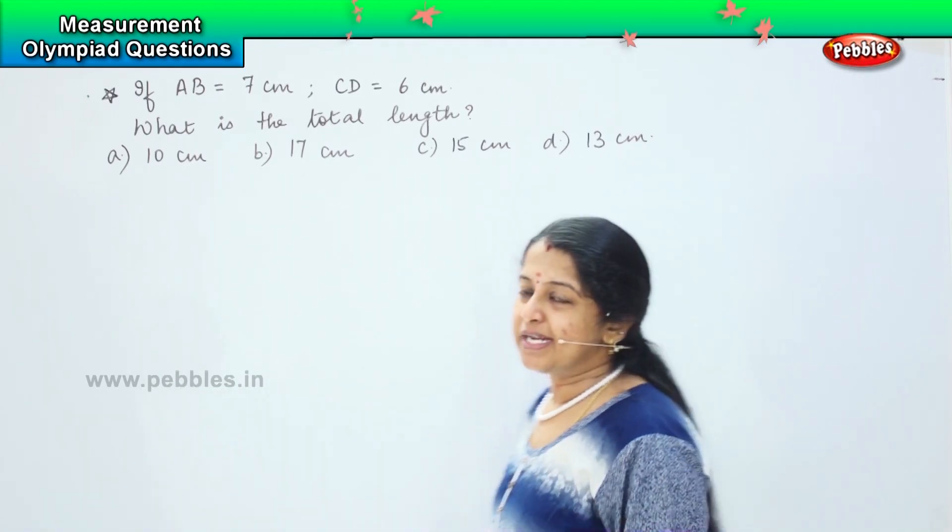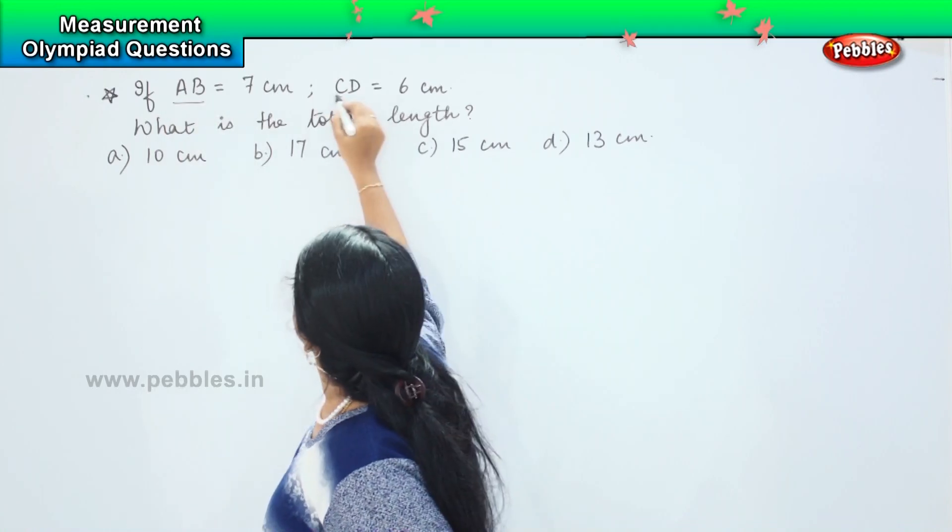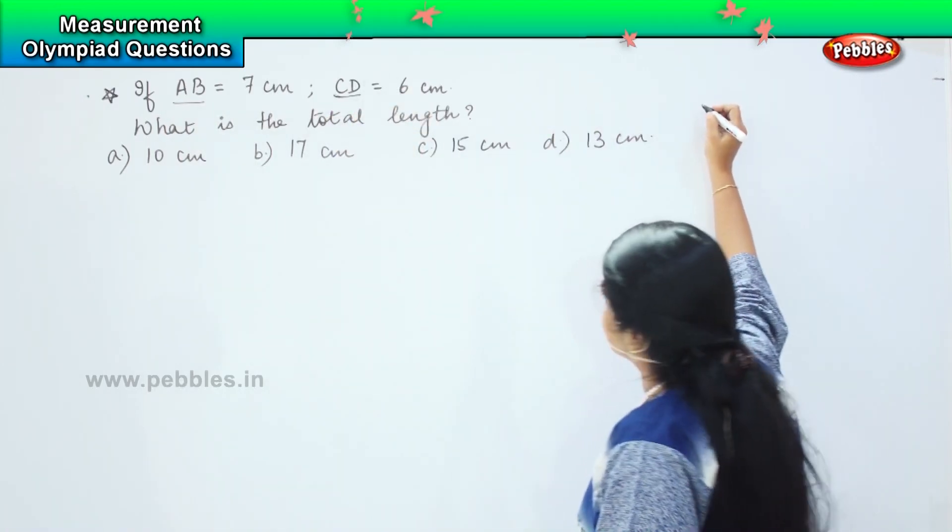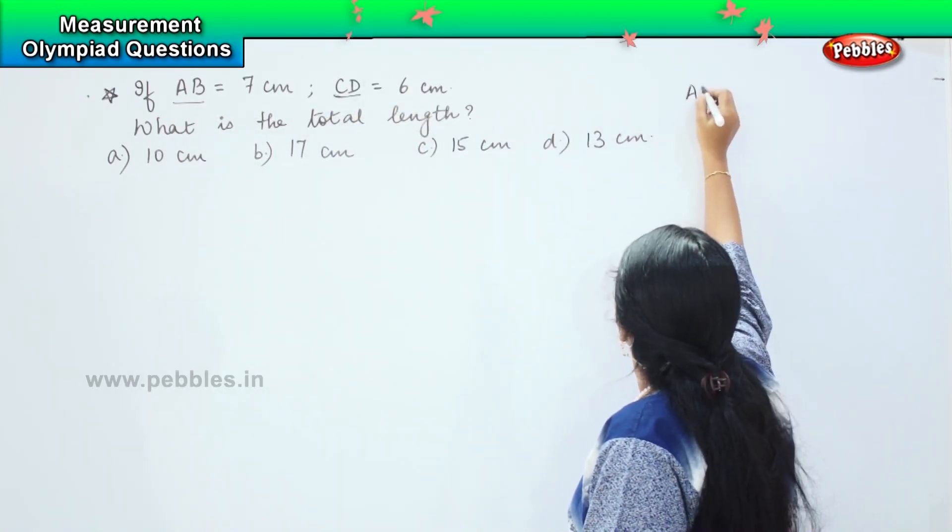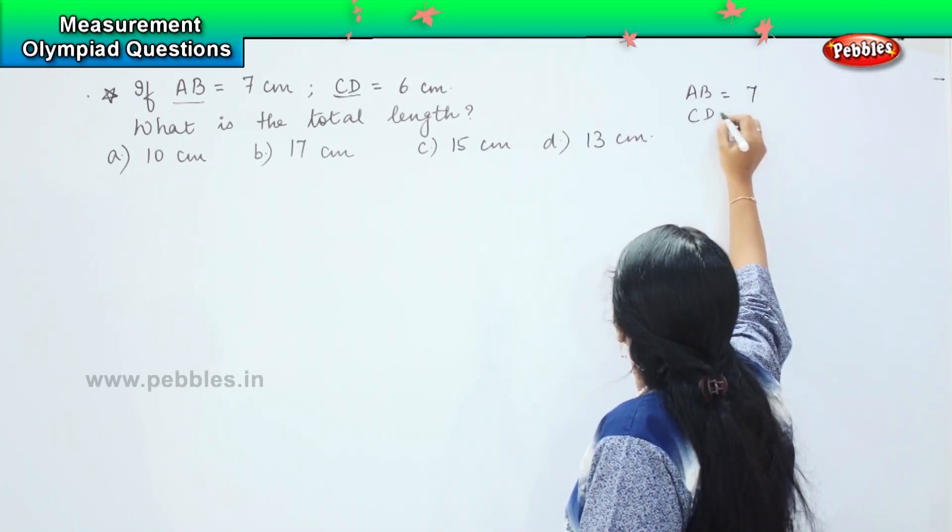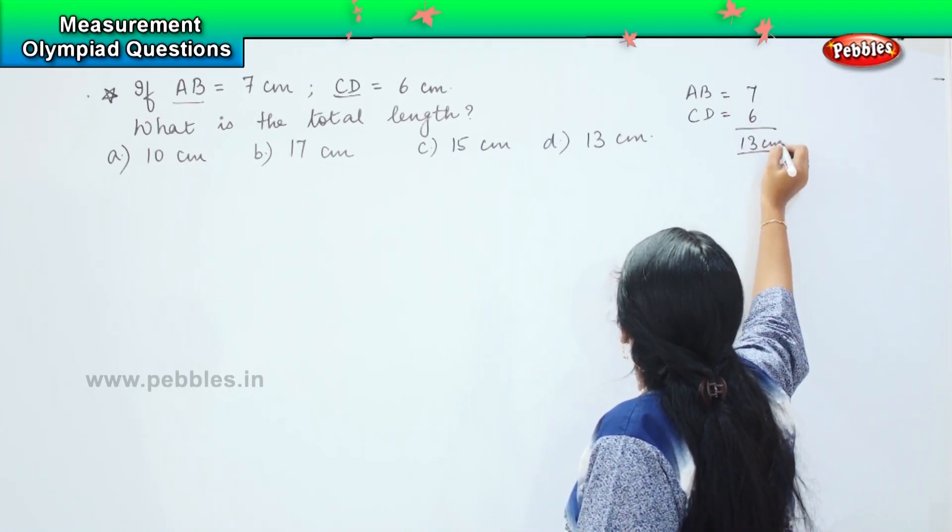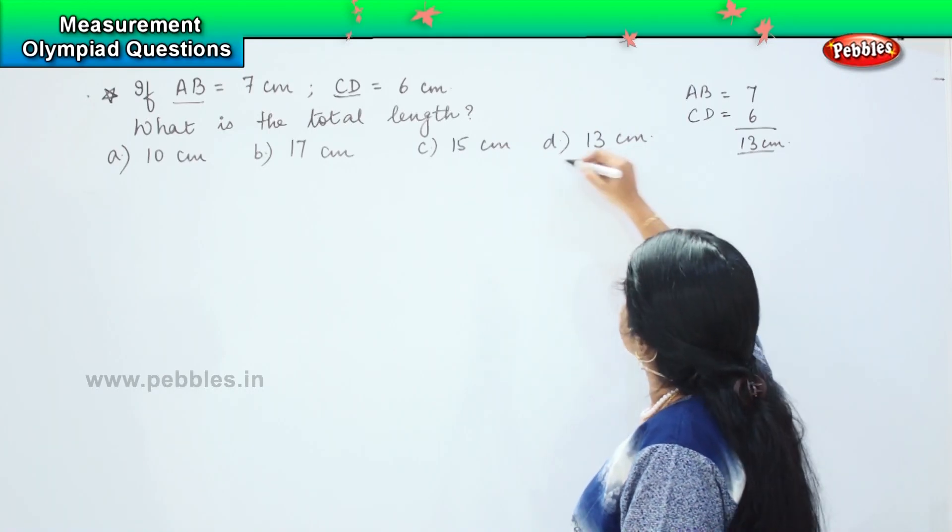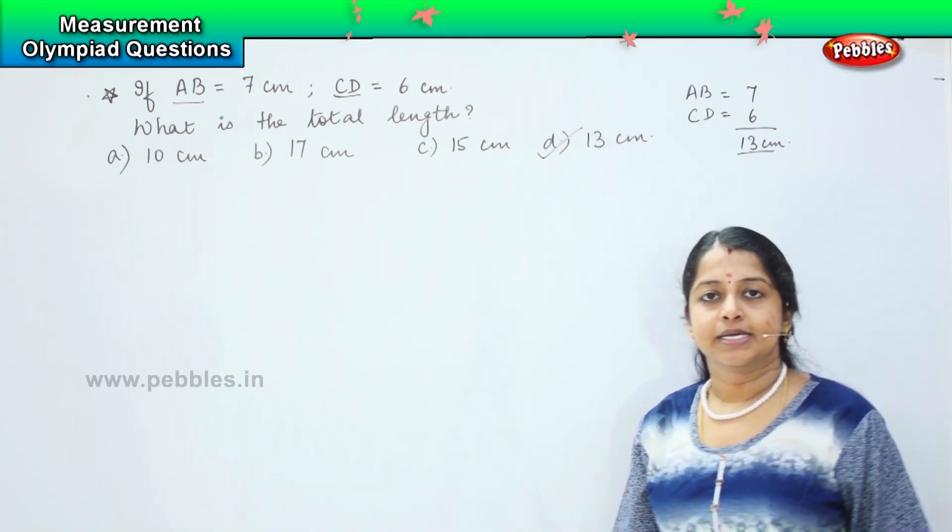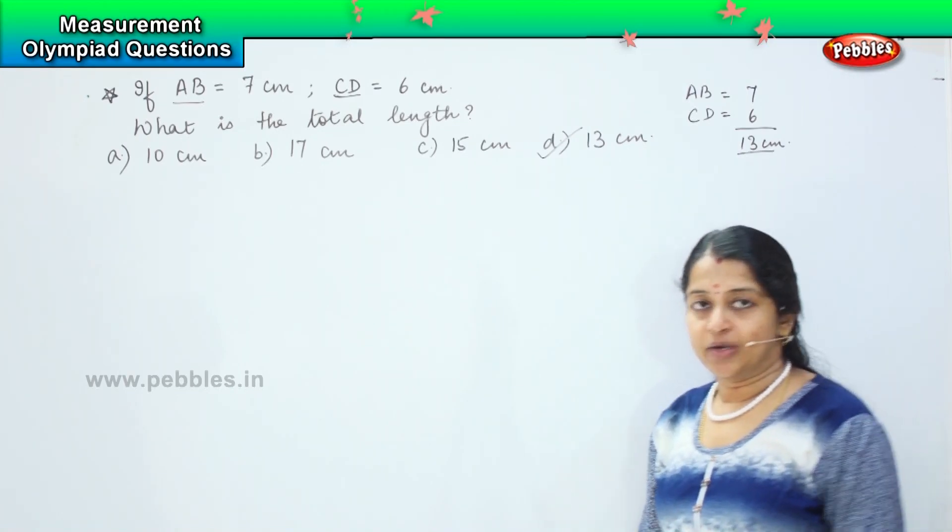So here it is very easy. They have given AB equals 7 and CD is 6, so we are going to add both. AB equals 7 and CD equals 6, so 7 plus 6 is 13. The right answer is D, 13 centimeter. Clear? Coming to the next question.